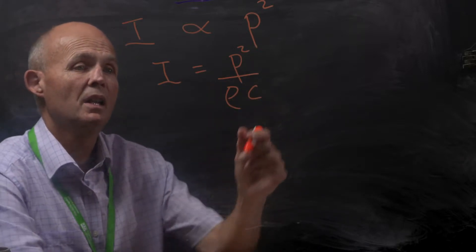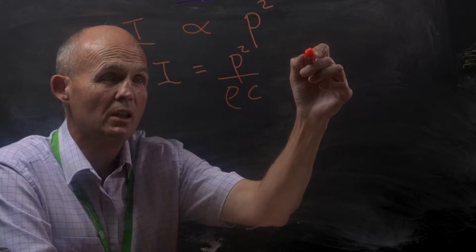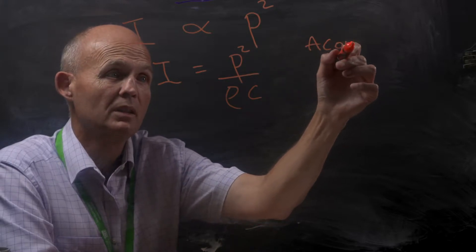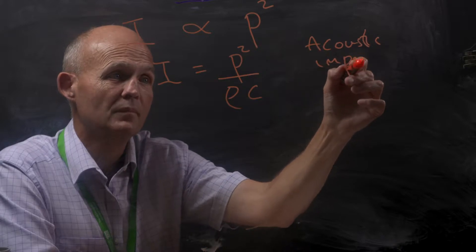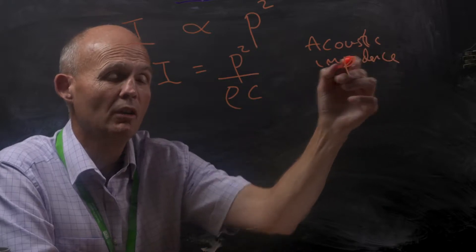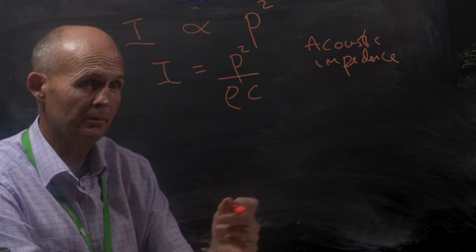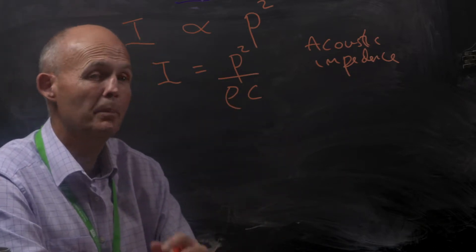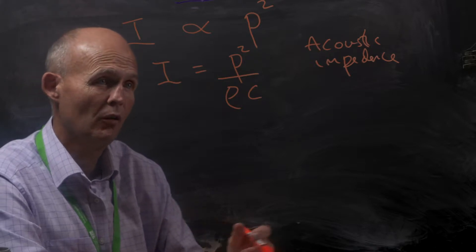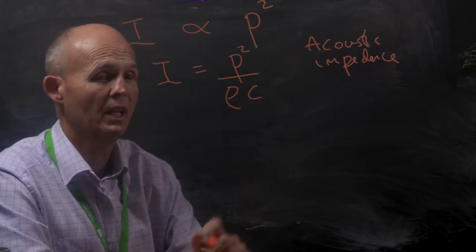Rho times c is called the acoustic impedance of the air. So effectively what we've got here is sound traveling through the air, and it will actually be impeded as a result of the property and the characteristics of the air.